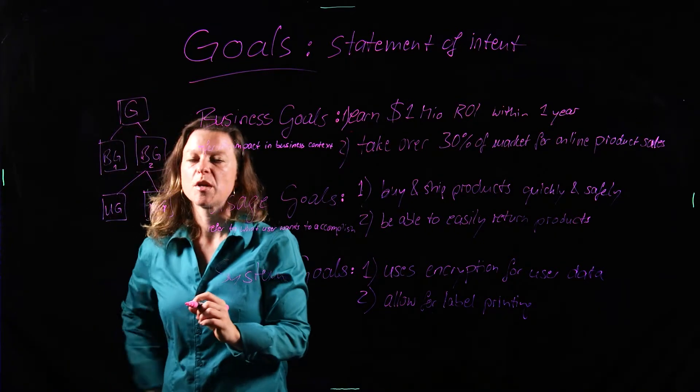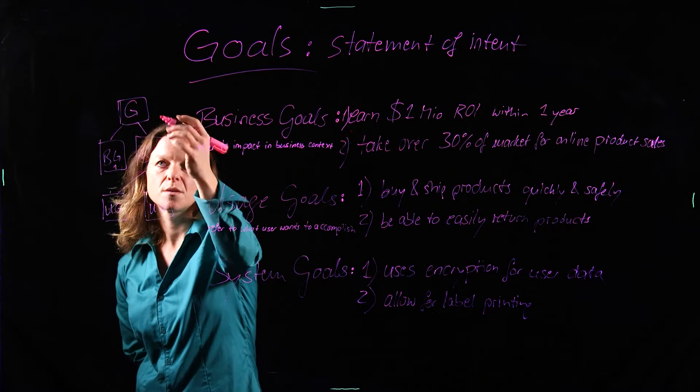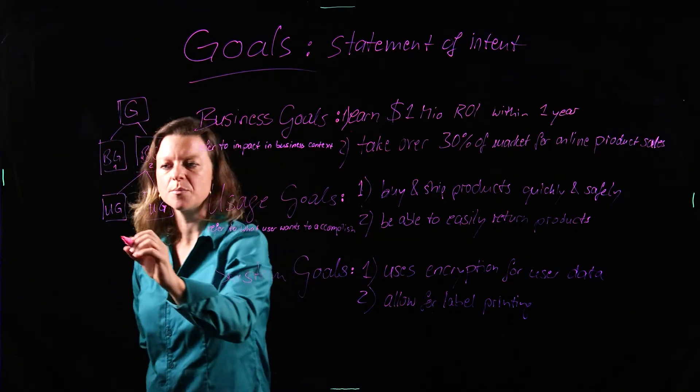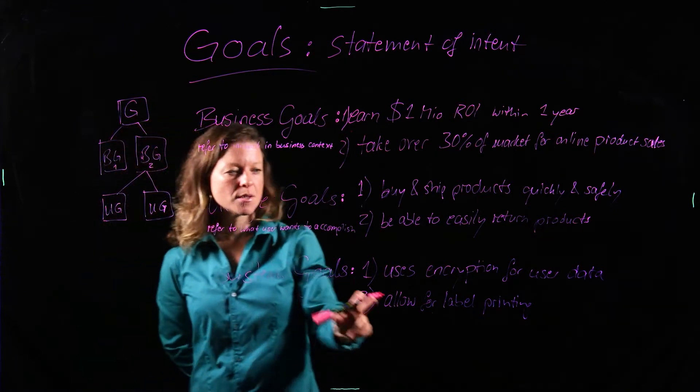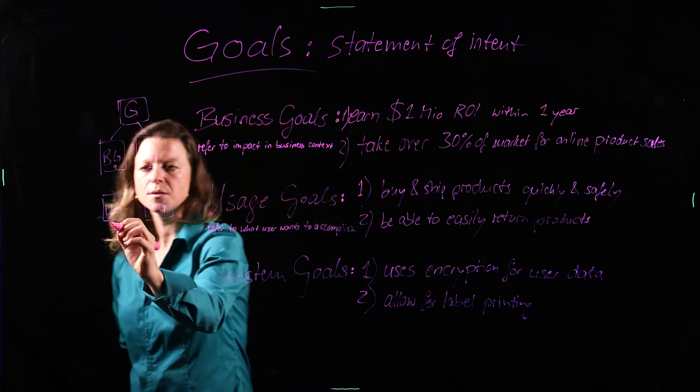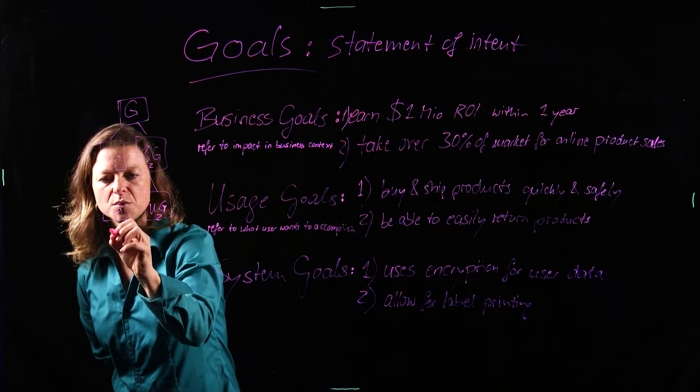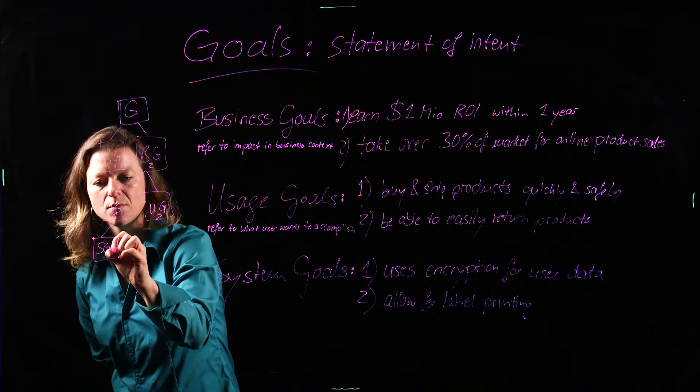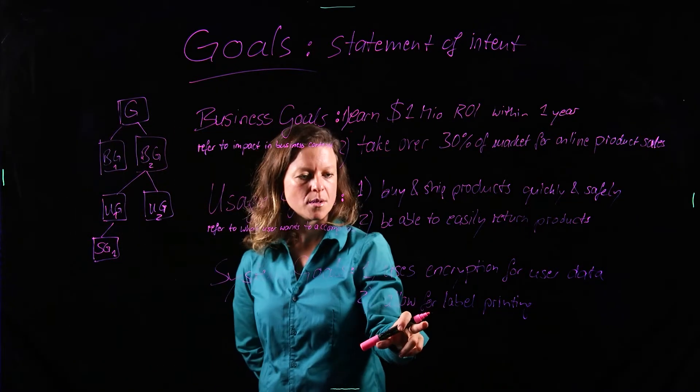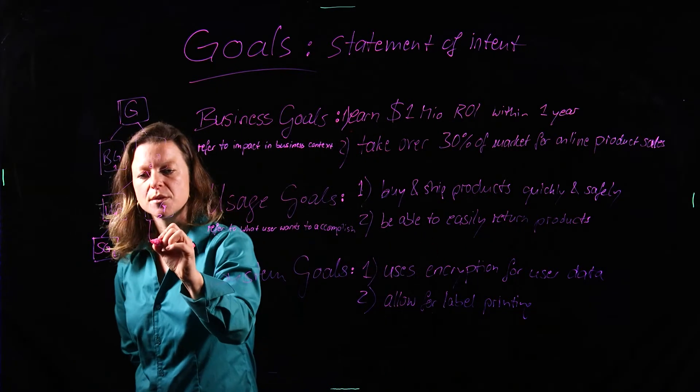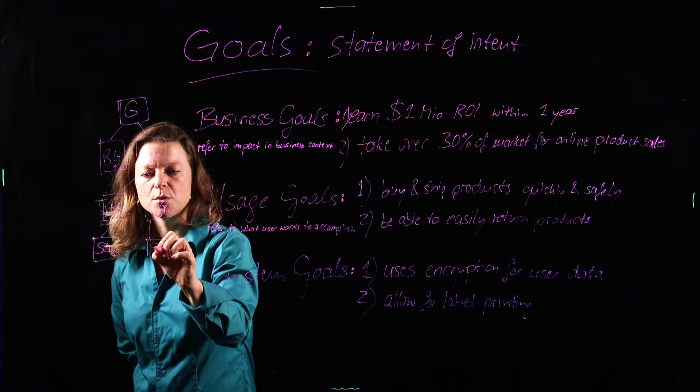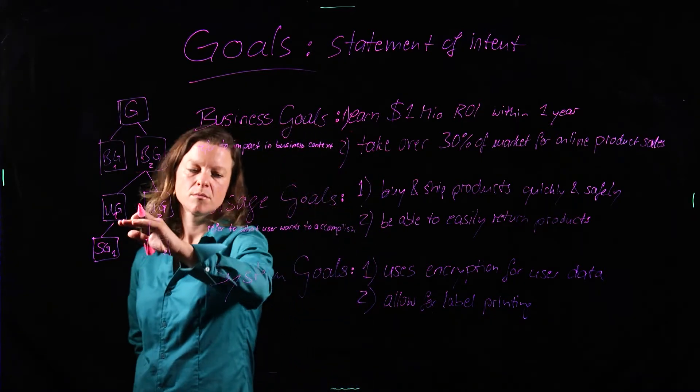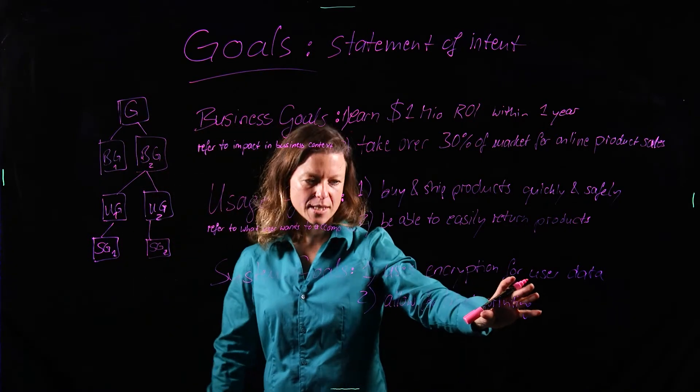This is our overall goal model. We have one root, which is the system goal. Sorry, the goal of developing that system. And then the system goal of we want to use encryption is derived from user goal one. And number two is derived from usage goal two. So we make that traceable to know at the end when we've broken down all those things.